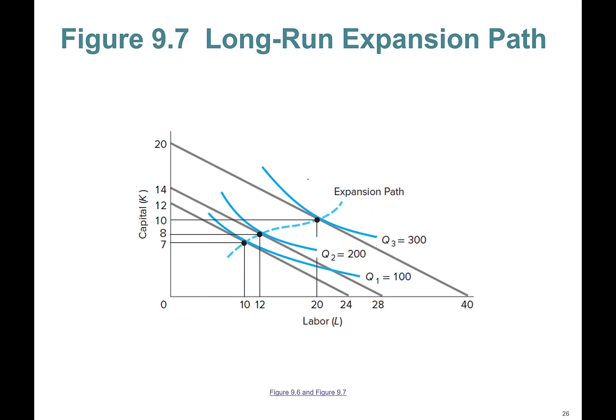If we look at our expansion path, where did we get those K*s and L*s? For instance, to produce 100 units, the best level of input combination is 10 units of labor and 7 units of capital, which gives you the least costly way of producing 100 units.